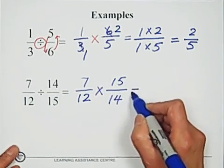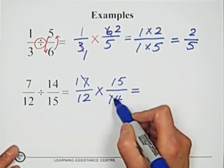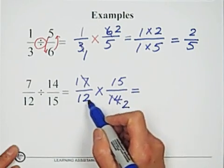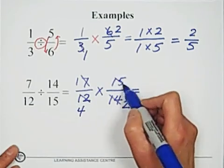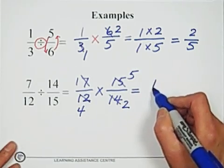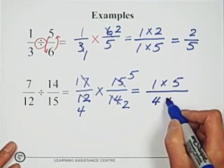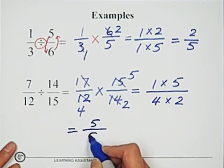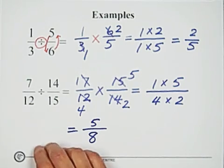Simplify: seven with fourteen gives one and two. Fifteen and twelve have three as a common factor — divide by three to get five and four. So we have one times five over four times two, which gives five over eight. That is the answer.